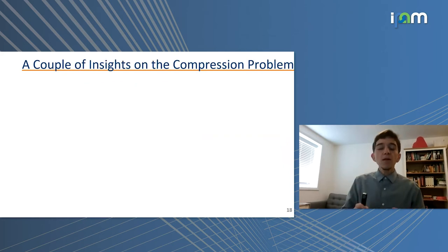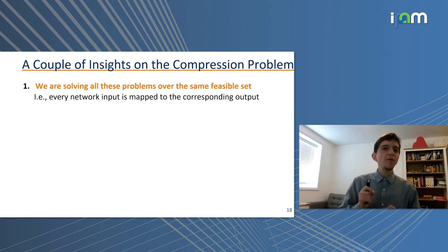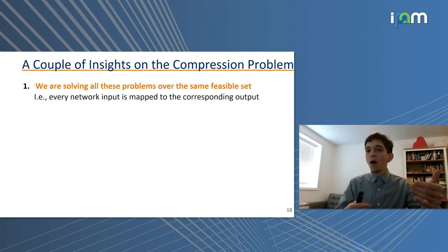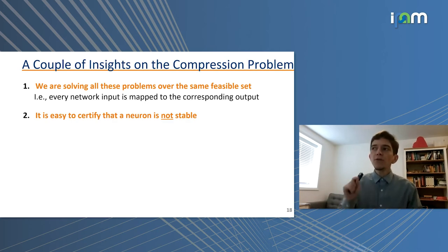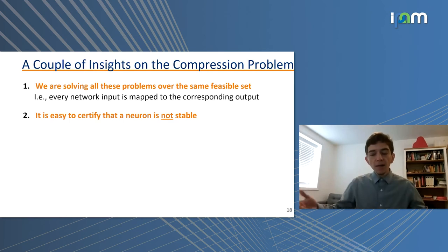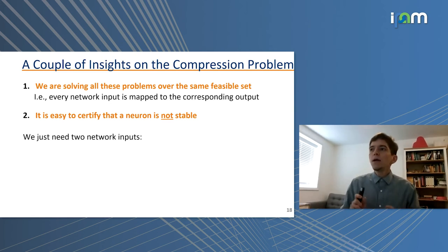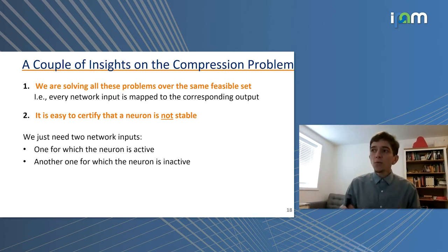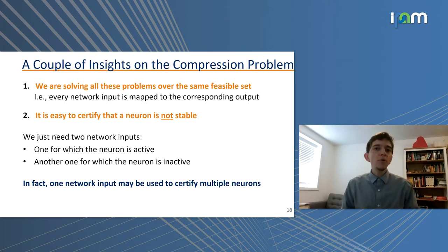There are two key insights about this compression problem that help us scale. First, we're solving all these problems over the same feasible set — the constraints map inputs to outputs of the neural network for every neuron. Second, it's easy to certify that a neuron is not stable: you just need two inputs, one that makes the neuron active and one that makes it inactive. Furthermore, one neural network input can certify multiple neurons simultaneously, since the same forward pass reveals the state of all neurons.